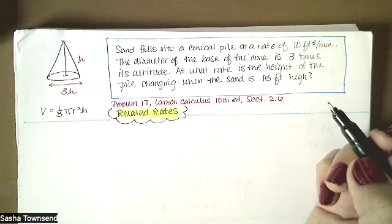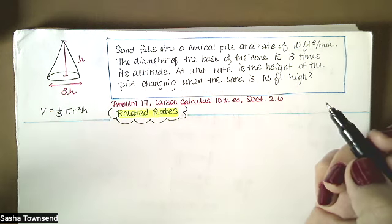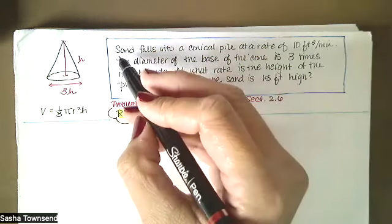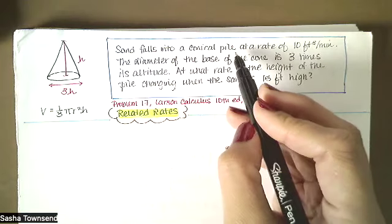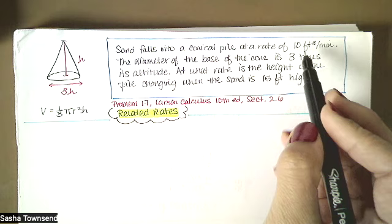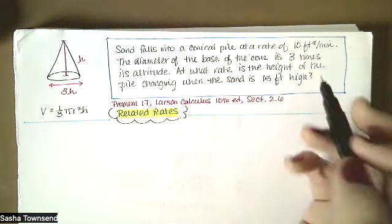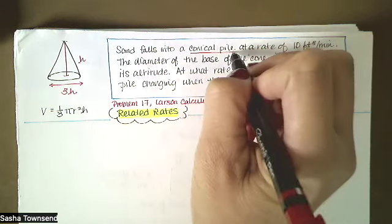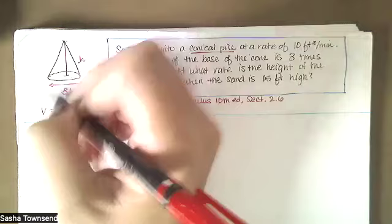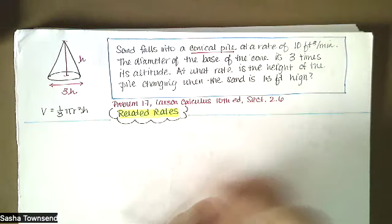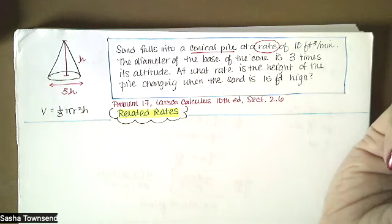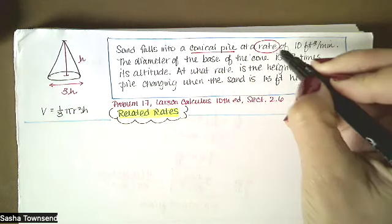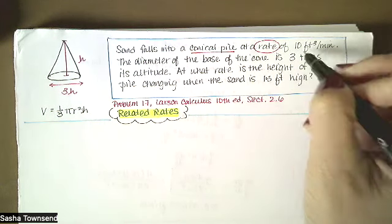We want to write everything in terms of variables that we define in the problem statement. Sand falls into a conical pile at a rate of 10 cubic feet per minute. When I see conical pile, I say that's going to be a cone, so I would draw a cone. And then it says at a rate — as soon as I see that word rate, I'm thinking that's a derivative, and that rate is 10 cubic feet per minute.